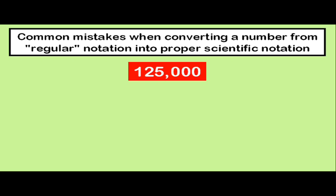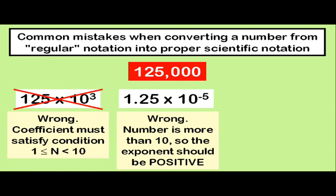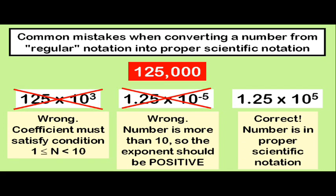Okay, now watch out for some common mistakes that students may make when converting a number into scientific notation. A hundred and twenty-five thousand, a person might decide to write one hundred and twenty-five times ten to the three. This is incorrect, because the coefficient is too large. It must fall between one and ten. Well, one point two five times ten to the negative five might seem like a better answer, but this is still incorrect, because the exponent should be positive, not negative. A hundred and twenty-five thousand should be written as one point two five times ten to the fifth power.